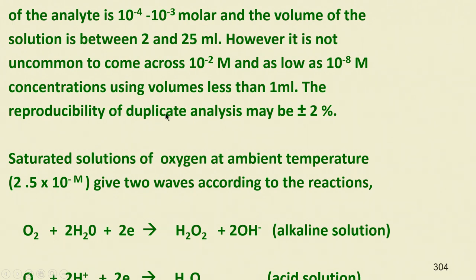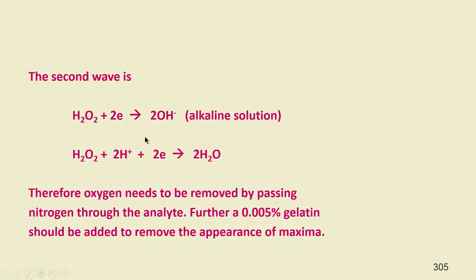Reproducibility of duplicate analysis may be plus or minus 2 percent. Saturated solutions of oxygen at ambient temperature give two waves: O₂ + 2H₂O + 2e⁻ → H₂O₂, and in acidic solution O₂ + 2H⁺ + 2e⁻ → H₂O. The second wave is H₂O₂ + 2e⁻ going to alkaline solution, and H₂O₂ + 2H⁺ + 2e⁻ → 2H₂O. Oxygen must be removed by passing nitrogen through the analyte.